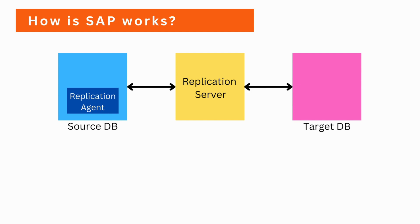As you can see in the diagram, we have a source database and a target database. In the source database, we have a replication agent that monitors the changes in the source database. Once it detects any change, it replicates the changes to the Replication Server, which will take care of the replication process to the target database.